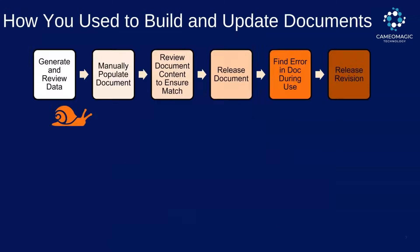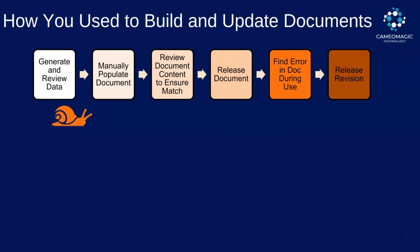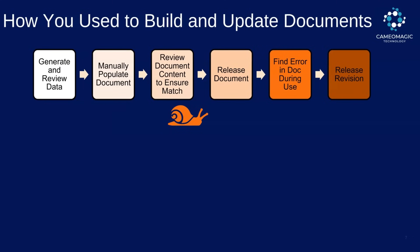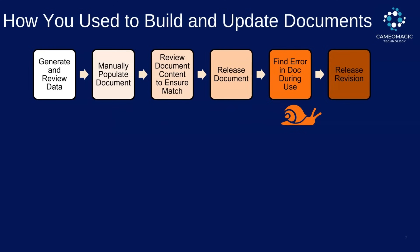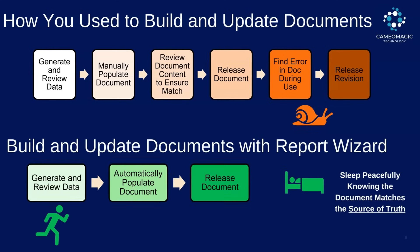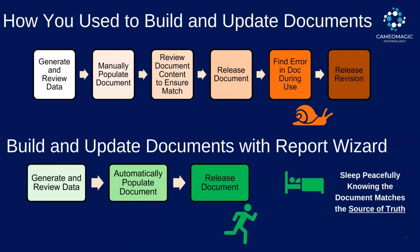Let's take a quick look at a process overview. You used to spend a lot of time manually populating your documents, reviewing for accuracy, and then still finding errors later on that cause you to drive a revision. This was slow. Now, with the Report Wizard and your template file, you can automatically populate these documents as fast as data creation will allow, and then rest knowing that what you deliver matches the latest and greatest. Now, on to the tutorial.